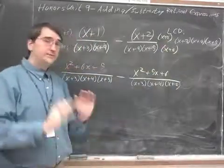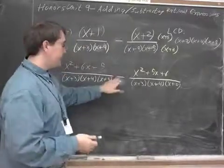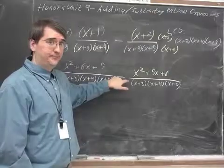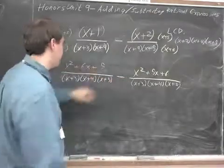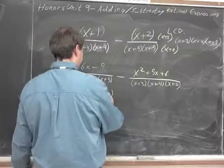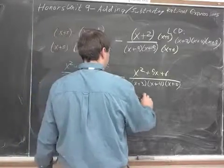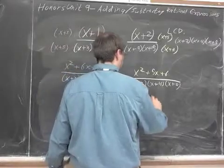Now, be very, very careful about this next step. This is a subtraction problem, which means I'm taking all of these: the x squared plus 6x plus 5. And from that, I'm subtracting all of the second: x squared plus 5x plus 6.